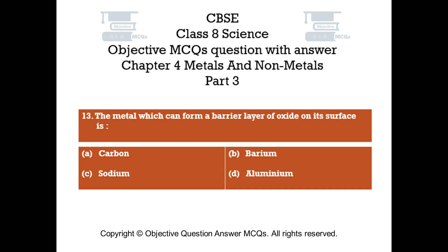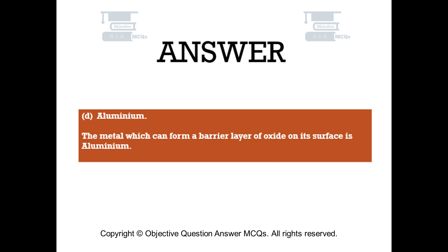Question number 13. The metal which can form a barrier layer of oxide on its surface is. Option A: carbon. Option B: barium. Option C: sodium. Option D: aluminium. The right answer is option D. Aluminium. The metal which can form a barrier layer of oxide on its surface is aluminium.